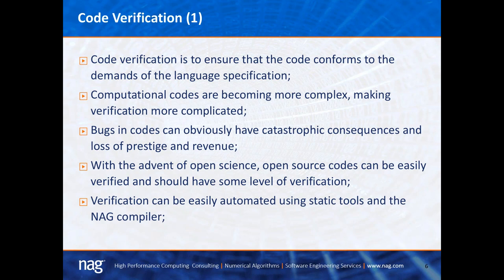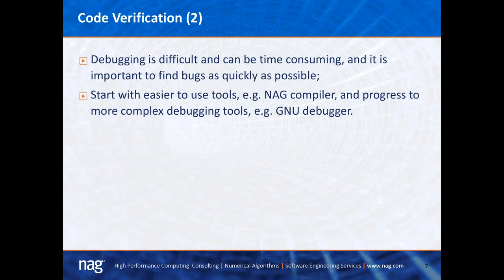With the advent of open science, codes can easily be verified because the source code is put on the web. However, before you release your code, it should have some level of verification. Verification can also be automated using static tools as well as an aided compiler, and that could be included in a continuous integration framework. Debugging is difficult and can be very time consuming, so it's really important to find bugs as quickly as possible. Start with easier-to-use tools such as an aided compiler, then progress to more complex tools such as the GNU debugger.